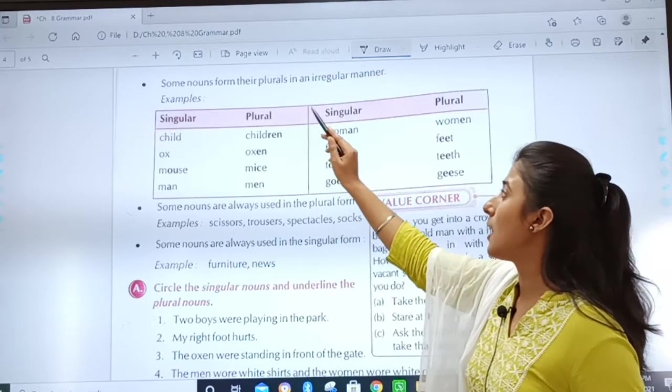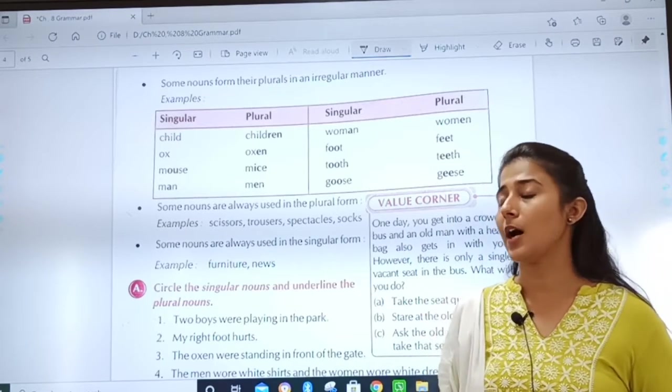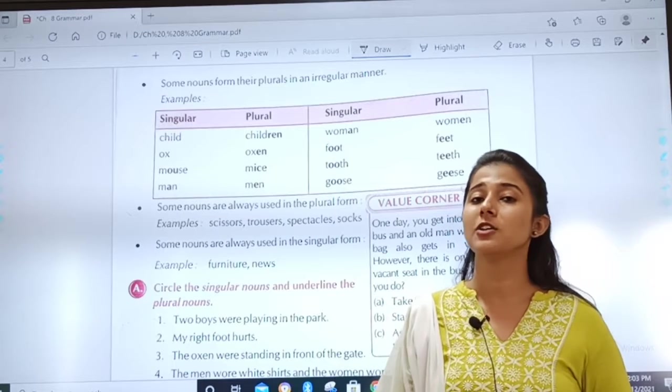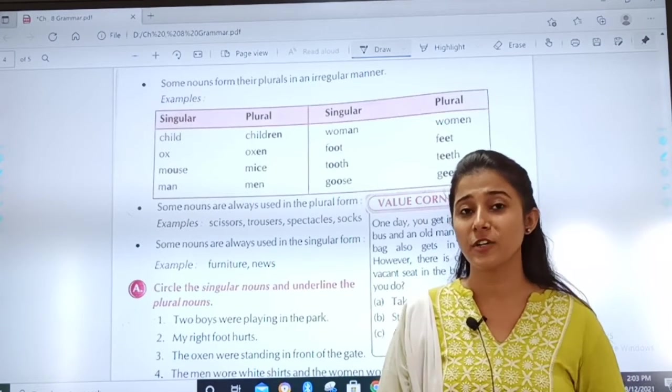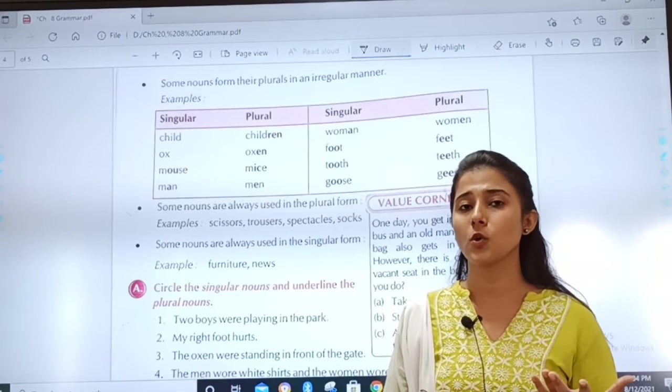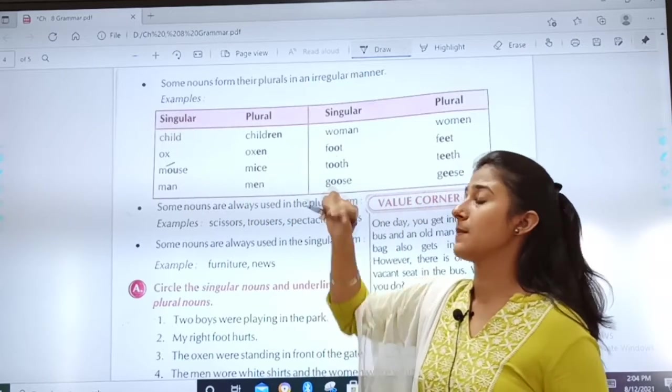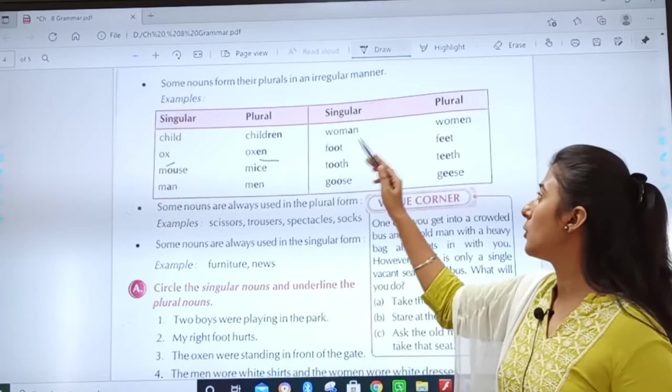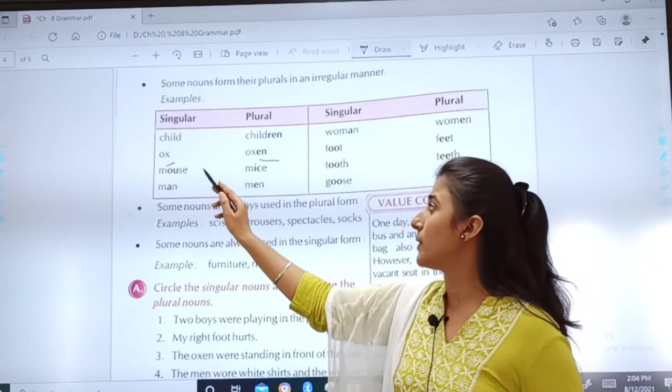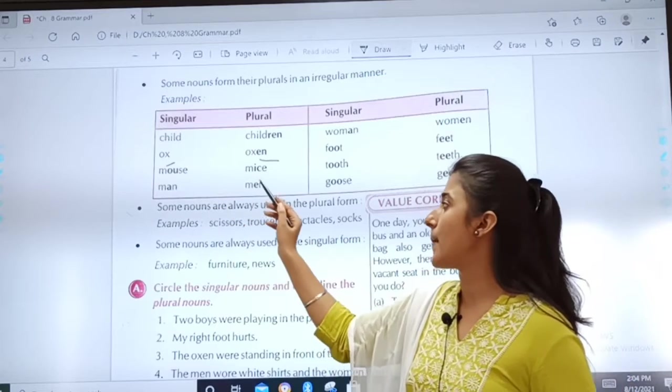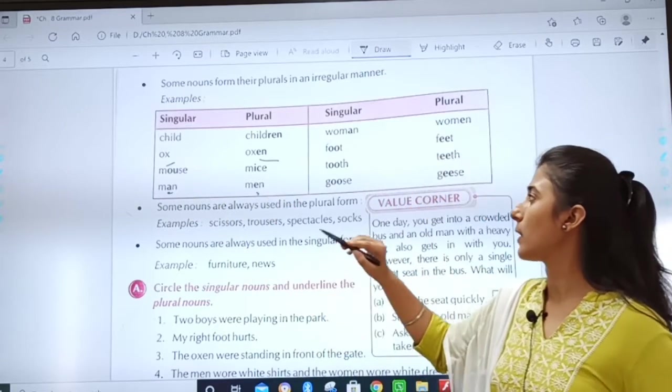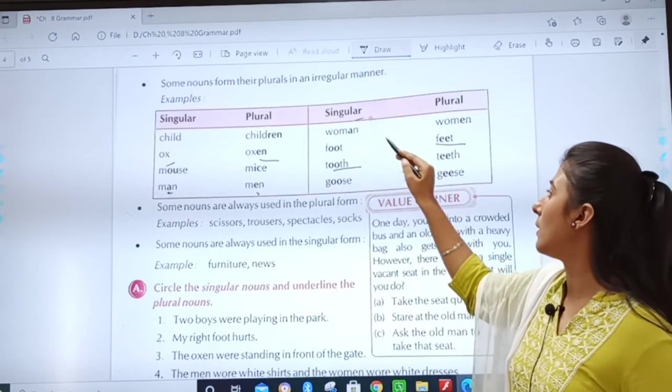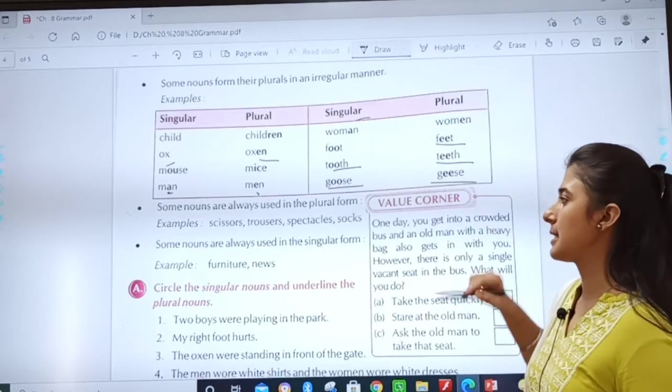So, children. See. Some nouns form their plurals in an irregular manner. Now, these nouns form irregular manner. See. Child. Child. What will be the plural of child? Children. Ox. We studied in the first box. When the noun ends with X, SH. So, we add ES. But, here. These are some exceptions. Okay? So, ox. What will be the plural of ox? Oxen. Here, no rules are followed. You have to just remember. What will be the plural of mouse? Mice. Plural of man. Men. Woman. Women. Foot. Feet. Tooth means one tooth. Singular. Plural will be teeth. Goose and geese. Okay, children.